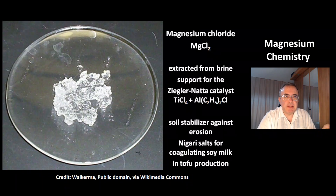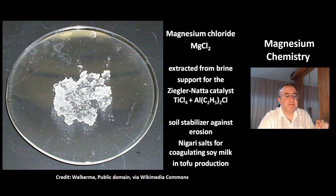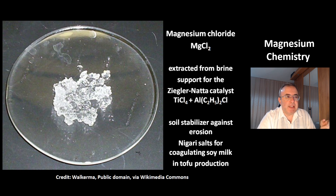This is magnesium chloride, MgCl₂. It can be directly extracted from brine. It can be used as a support for the Ziegler-Natta catalyst — titanium tetrachloride and dialkyl-aluminium chloride. It is also useful as a soil stabilizer against erosion. Nigari salts are also magnesium chloride — they are used for coagulating soy milk in the production of tofu.